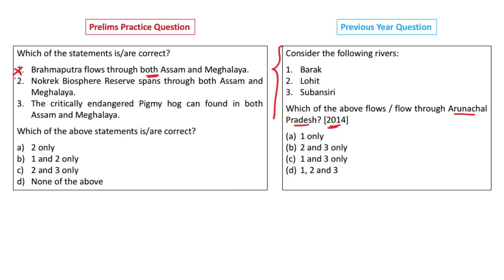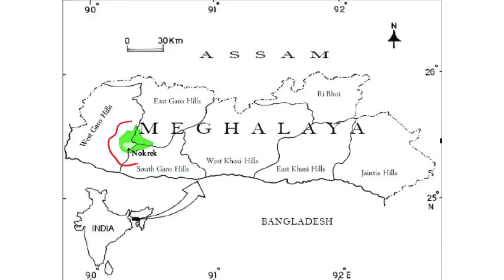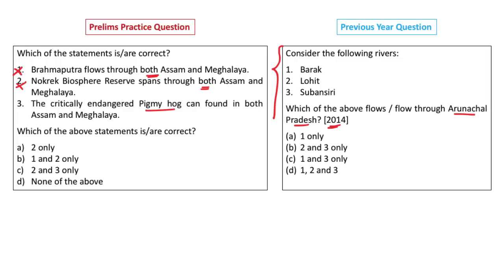Statement 2: Nokrek Biosphere Reserve spans through both Assam and Meghalaya. You need to know the distribution of Biosphere Reserves, National Parks, and Wildlife Sanctuaries. Nokrek Biosphere Reserve lies wholly within Meghalaya, so this statement is incorrect. Statement 3: The critically endangered Pygmy Hog can be found in both Assam and Meghalaya. The last known population of Pygmy Hog is found in Manas National Park in Assam; there is no well-known habitat in Meghalaya. This statement is also incorrect. The answer is option D.